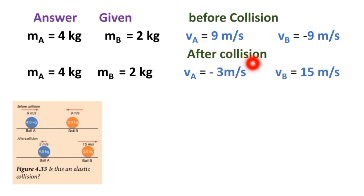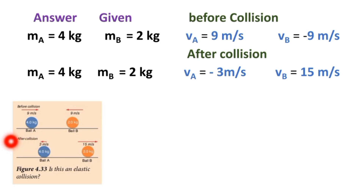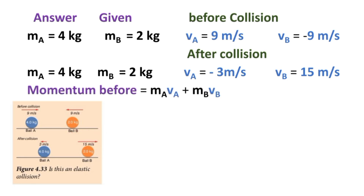After collision: velocity of ball A = minus 3 meter per second, velocity of ball B = 15 meter per second.